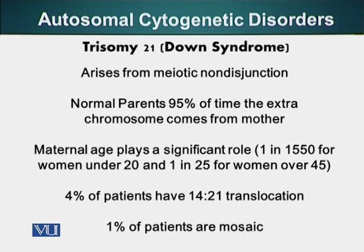4% of the patients have Robertsonian translocation, 14-21. Chromosome 14 is an acrocentric chromosome, and chromosome 21 is also an acrocentric chromosome. We won't discuss this further as it is slightly beyond the scope of this course. However, 1% of patients are mosaic, meaning not all of their cells are genetically the same — some cells carry an extra chromosome 21, while others have the normal total of 46 chromosomes.